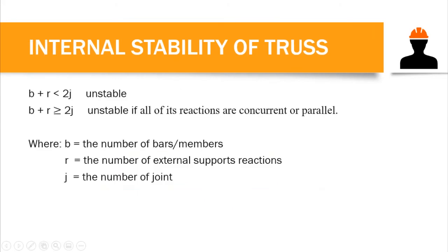For internal stability of a truss: if the structure is considered unstable, the number of members and equilibrium equations are insufficient to resist loads, meaning the truss would collapse. We know a member arrangement is unstable if B plus R is less than 2J. However, even if B plus R is greater than or equal to 2J, the truss can still be unstable if all reactions are concurrent or parallel, or if the members create a collapsible section. This is how we check stability, determinacy, and indeterminacy.